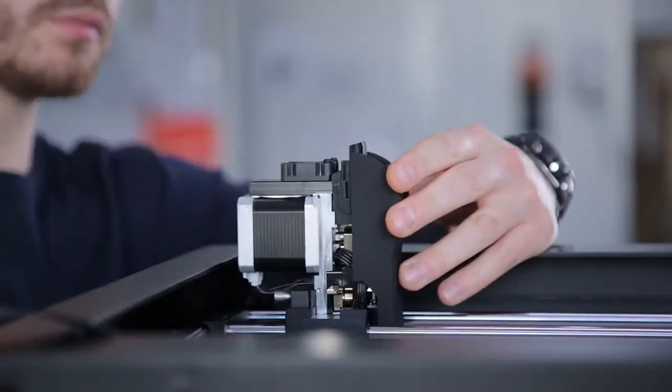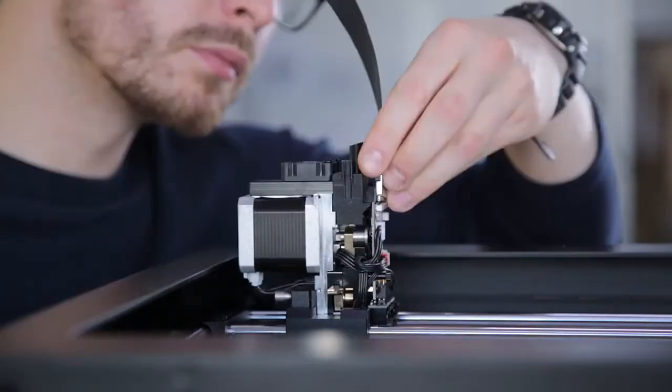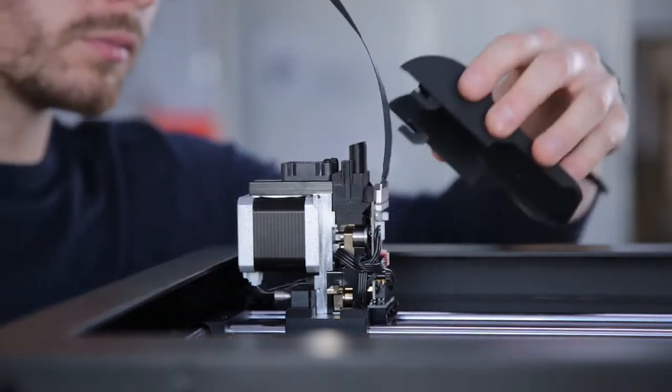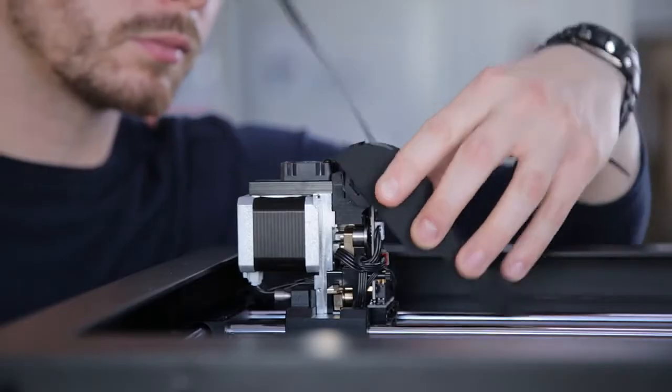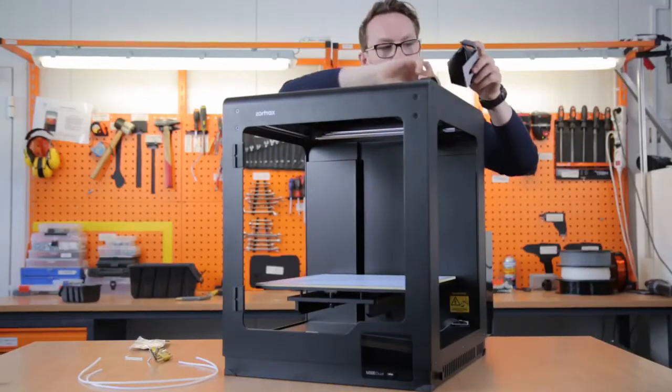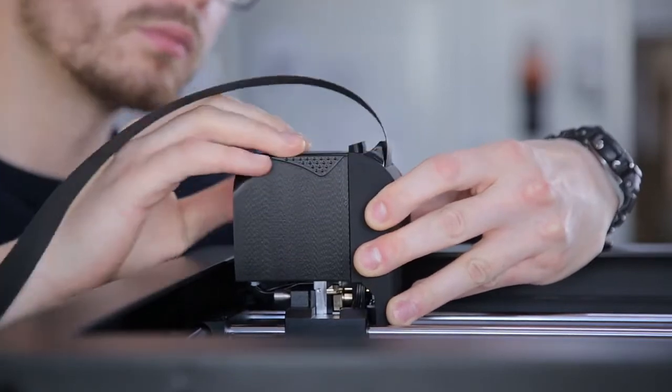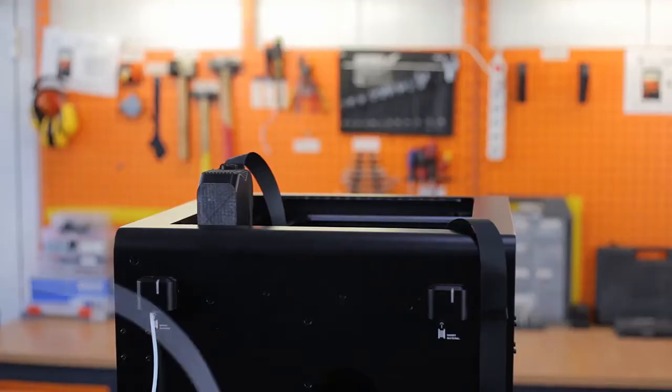Remove the extruder back cover by pulling it upwards and remove the front cover. Plug in the extruder cable and place the front and back covers in their proper place.